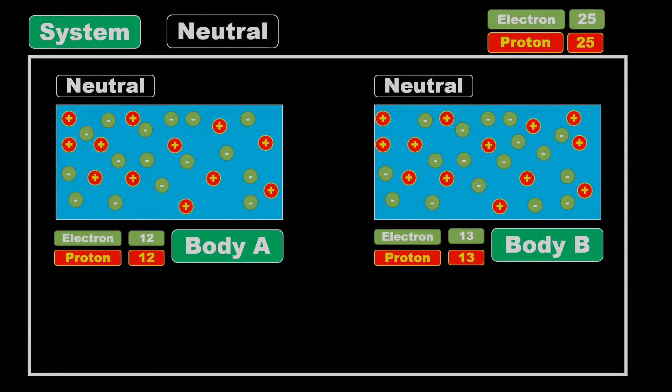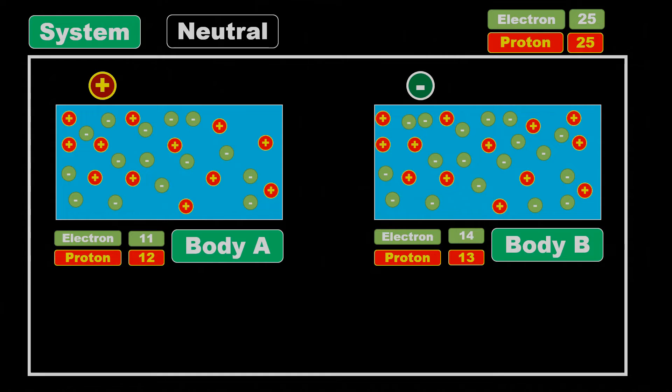When we rub two bodies, electrons are transferred between the two bodies, causing the body that donates electrons to become positively charged, while the body that accepts electrons becomes negatively charged.